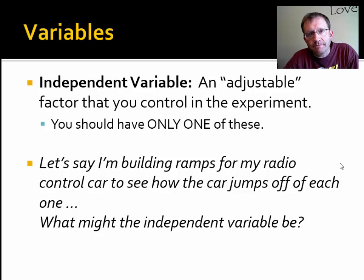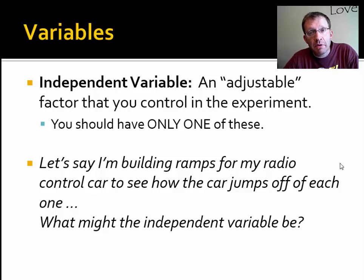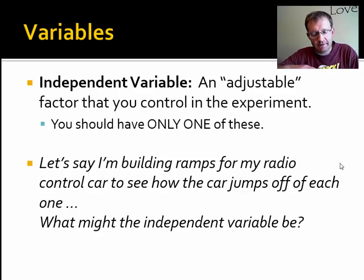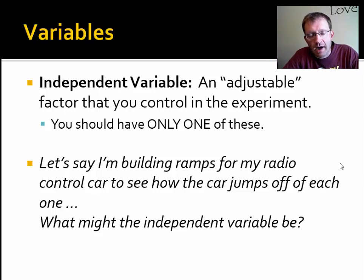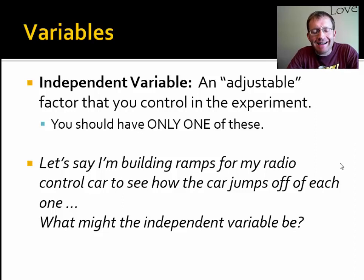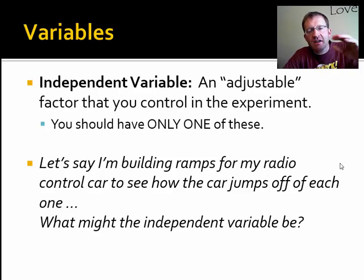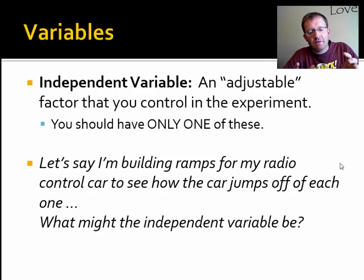For example, suppose you're building ramps for a radio control car to see how the car jumps off each one. What might the independent variables be? You might adjust the length of the ramp — making ramps that are 20, 30, or 40 centimeters long. You could adjust the height of the ramp at the end — 5, 10, or 15 centimeters tall. You could adjust the materials — wood, plastic, or cardboard. You could also adjust the angle of the ramp, which gets into geometry, or is useful in physics for studying projectile flight. There are lots of good choices for independent variables, each of which could result in a difference somewhere else.